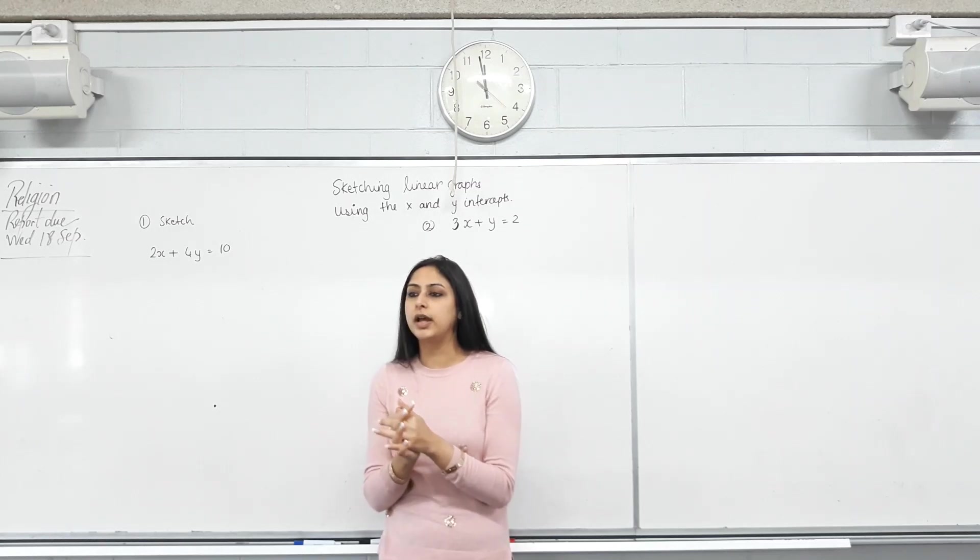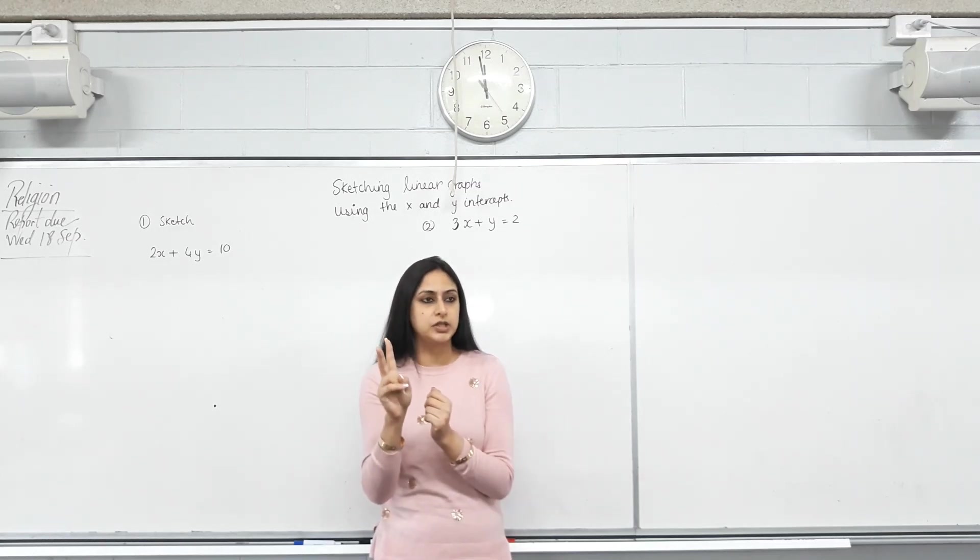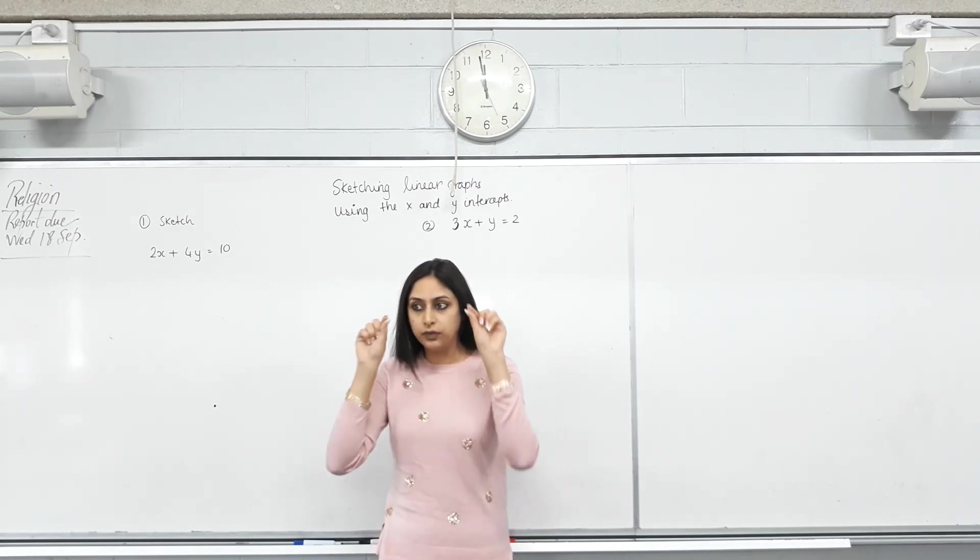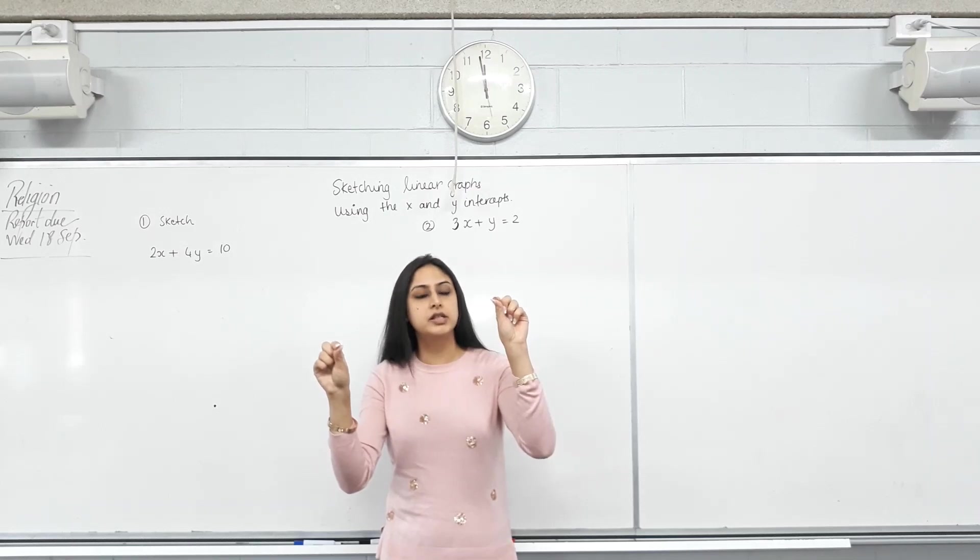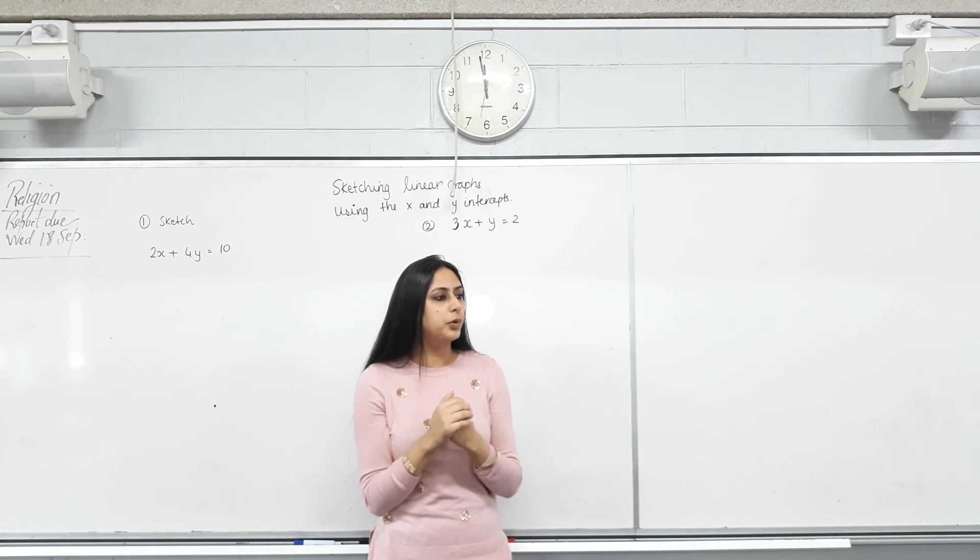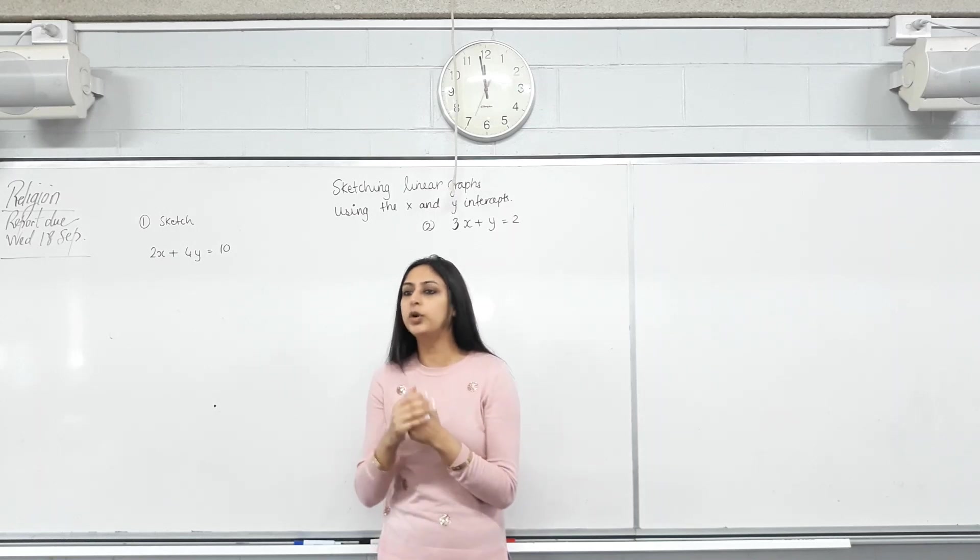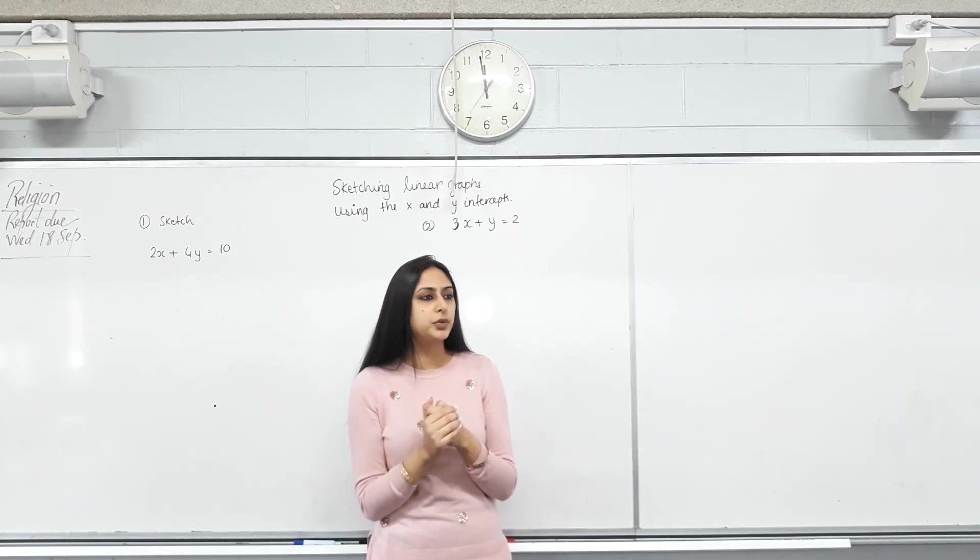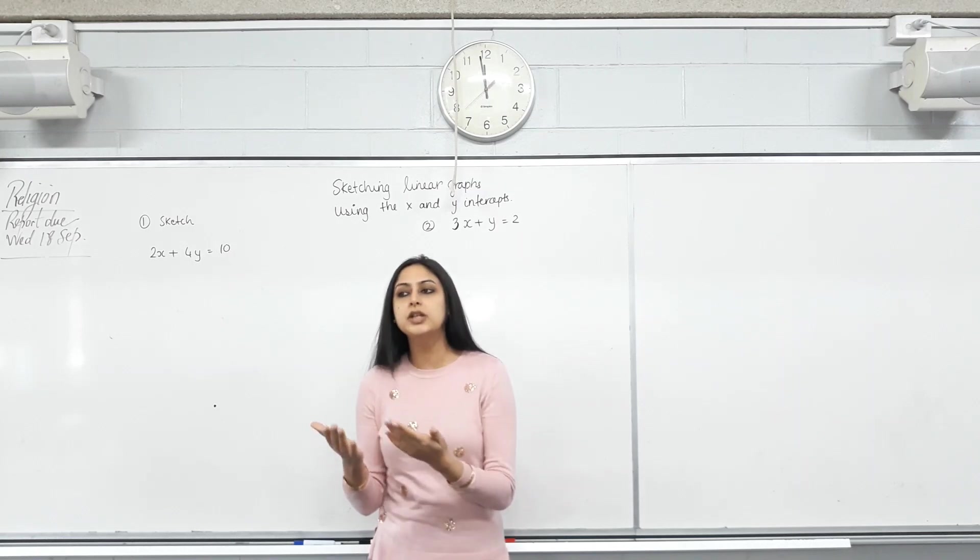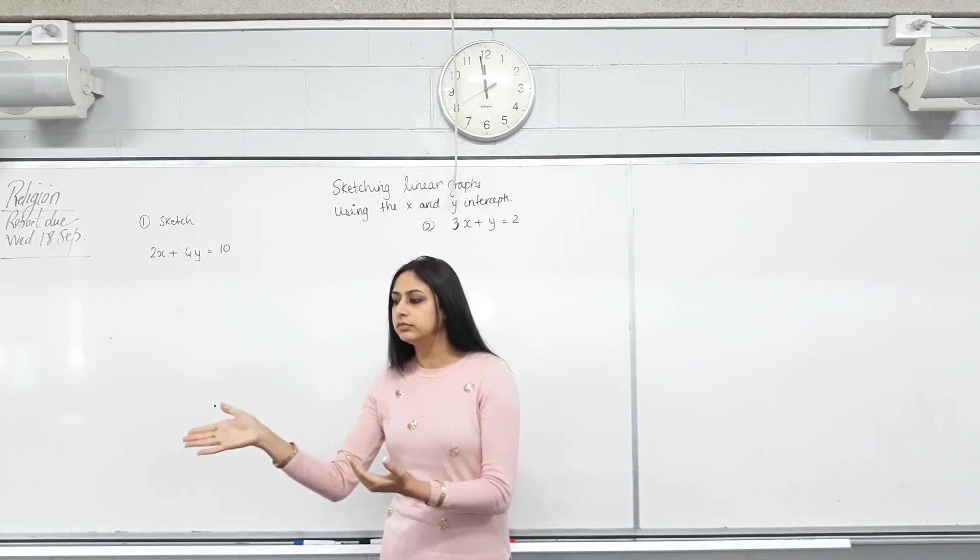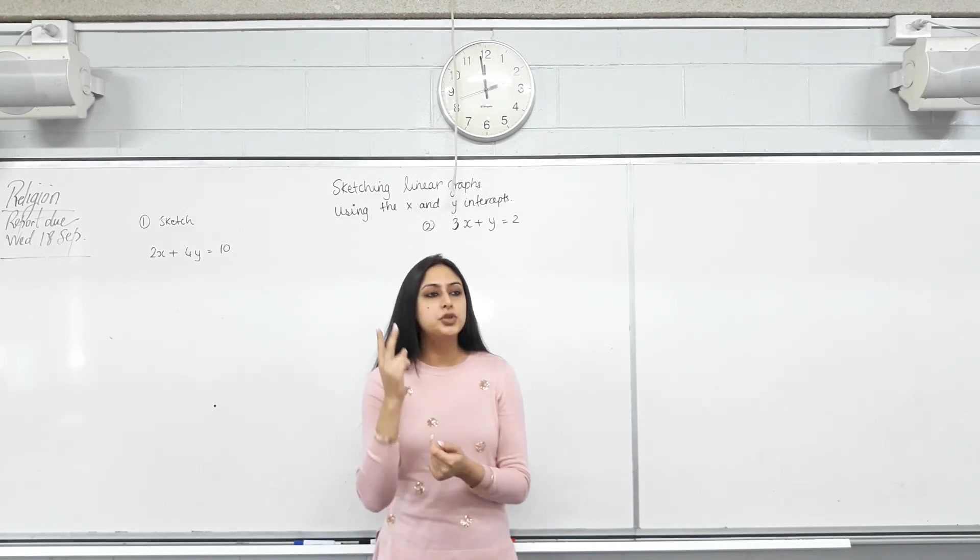So now that you know it's going to be a straight line, if you know two points through which the line passes, if I give you two fixed points, how many straight lines can you draw through them? One. So that means all we need is two points, don't we? We don't need to complete a table of values, do we? Because we know it is going to be a straight line. All we need is two points.